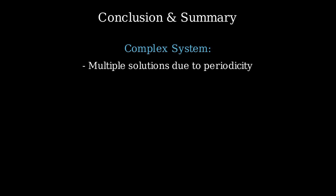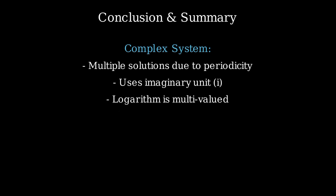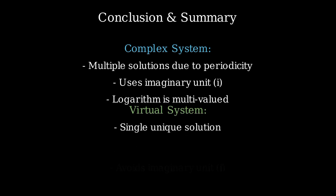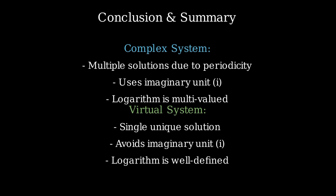To summarize: the complex system provides infinitely many solutions due to the nature of the complex logarithm, while the virtual number system gives a single, unique answer. By removing unnecessary complexities, the virtual number system offers a clearer and more intuitive way to handle equations like x to the power of x equals negative 1. So, which method do you think is more elegant? Let me know in the comments. And if you enjoyed this deep dive into mathematical systems, don't forget to like, share, and subscribe for more content like this.